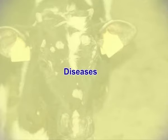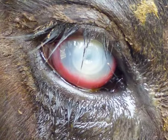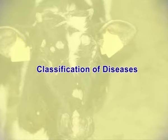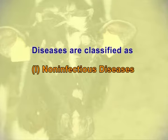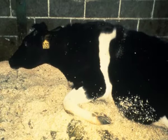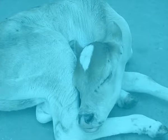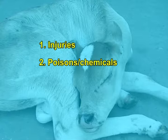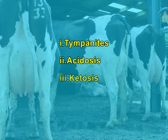Now we will see the diseases. Any condition that causes the systems of the animal to not function properly is called disease. Diseases are generally classified as non-infectious diseases and infectious diseases. Non-infectious diseases are not caused by an organism living within the animal and do not spread among other animals upon contact or contamination. Examples are injuries, poisons and chemicals, birth defects, and metabolic disorders. Some of the metabolic disorders in cattle are tympanitis, acidosis, ketosis and milk fever.